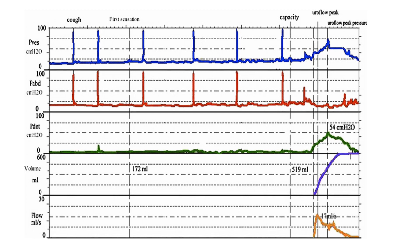Now let's look at a very important slide — a normal urodynamic graph. It shows vesical pressure (Pves), abdominal pressure (Pabd), detrusor pressure (Pdet), volume of urine voided, and flow in ml per second. During the filling phase, the flow line should remain at the baseline and should not rise. No detrusor pressure should normally rise during the filling phase.